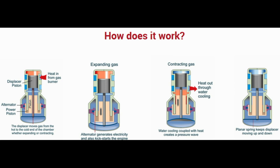A free piston engine is an internal combustion engine in which the crankshaft from a normal IC engine used in vehicles is removed, and the mechanical work is obtained just by the reciprocating movement of the piston or by some other means.